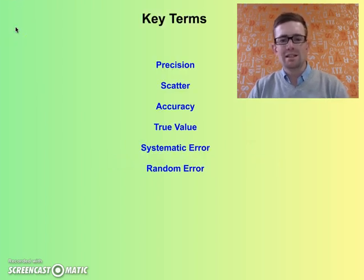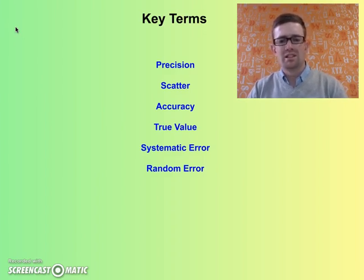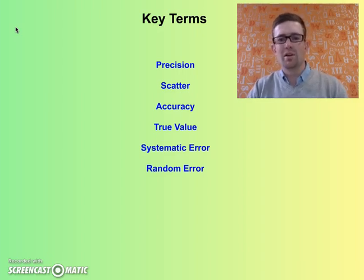These are the six key terms that we're going to look at in this video: precision, scatter, accuracy, true value, systematic error, and random error.